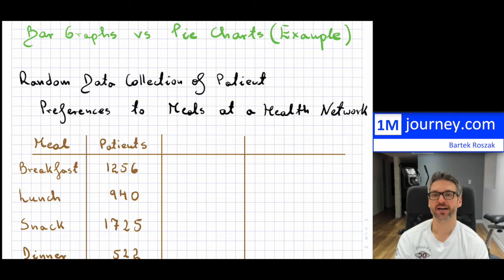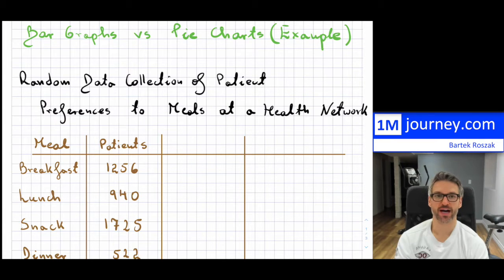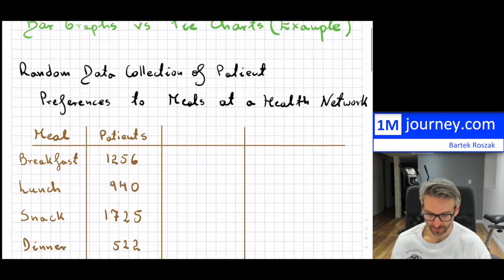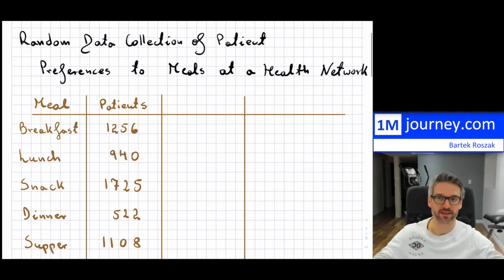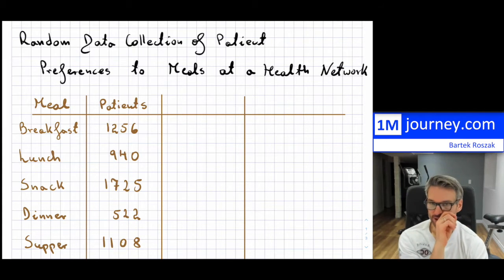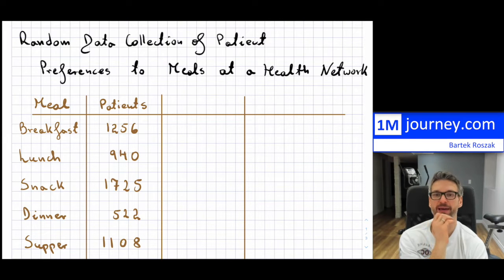You're obviously going to have to collect and then organize your data in some way. Let's say that we have already collected and organized everything. Here's a table — I made this up — but it's a random data collection of patient preferences to meals at a health network. Our variable here is patient preferences to meals.